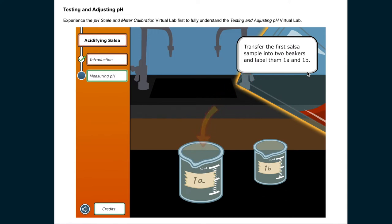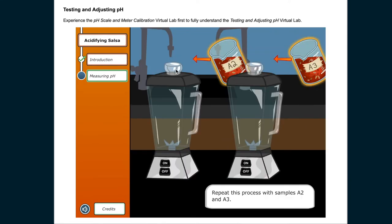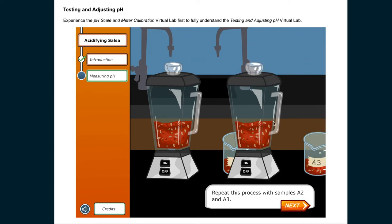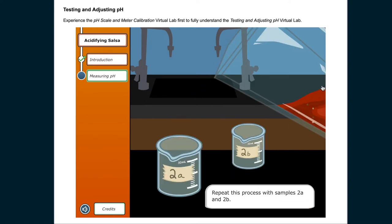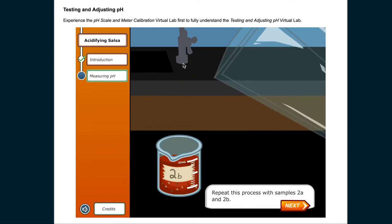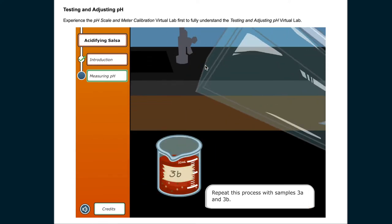Transfer the first salsa sample into two beakers and label them 1A and 1B. Repeat this process with samples A2 and A3, creating samples 2A and 2B, and samples 3A and 3B.